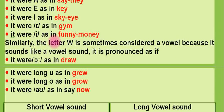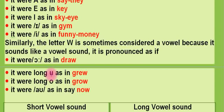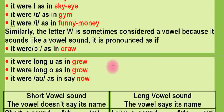Similarly, the letter W is sometimes considered a vowel because it sounds like a vowel sound. It's pronounced as if it were O, as in 'grow'; as if it were long U, as in 'grew'; as if it were long O, as in 'grow'; and as if it were OW, as in 'now'.